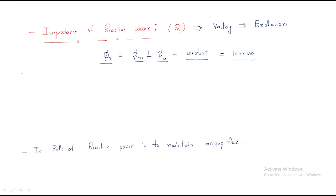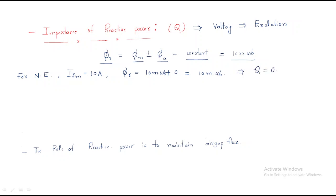First condition: normal excitation. If the machine is using normal excitation, assume the main field current is 10 amps. Then the resultant flux is 10 milliweber only. In normal excitation there is no armature flux — that should be zero. So the reactive power will become zero.